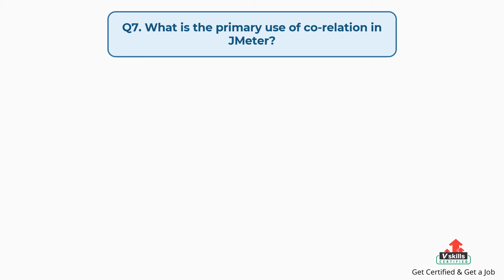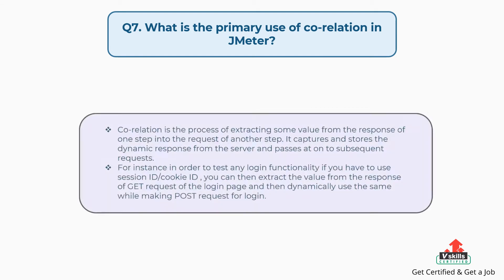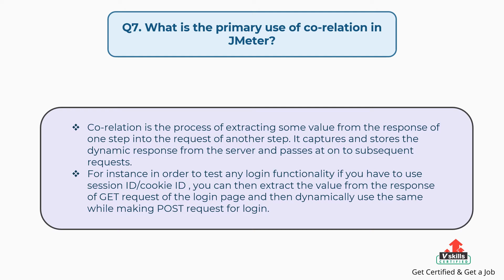Question 7: What is the primary use of correlation in JMeter? Correlation is the process of extracting a value from the response of one step into the request of another step. It captures and stores the dynamic response from the server and passes it to subsequent requests. For instance, to test login functionality, you can extract a session ID or cookie ID from the response of a GET request of the login page and dynamically use it while making a POST request for login.